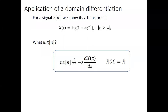Let's look at an example applying Z-domain differentiation. We have a discrete time signal x[n] whose Z-transform X(z) is given in a specific form with a known region of convergence. We want to calculate x[n]. Normally we'd use the inverse Z-transform, which is out of scope for this course. But we can apply Z-domain differentiation to find x[n] without the inverse Z-transform. The first step is to calculate dX/dz using the chain rule.